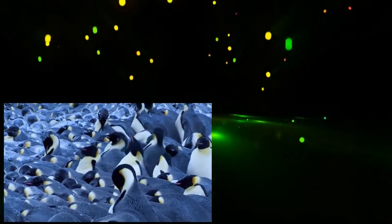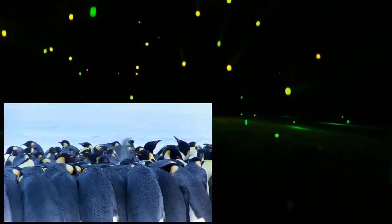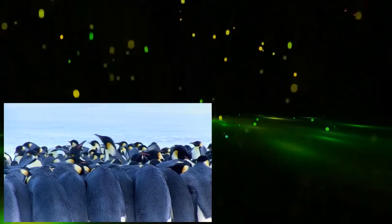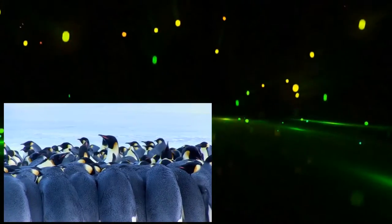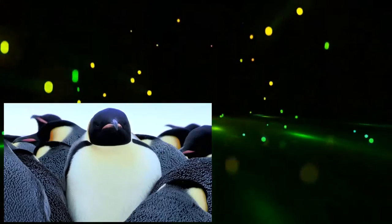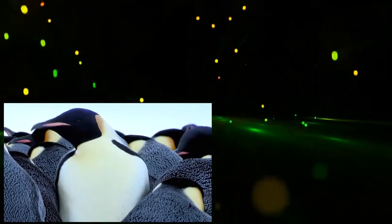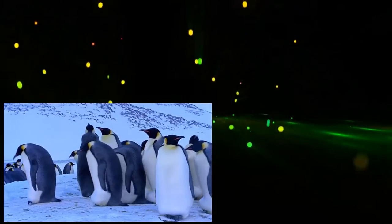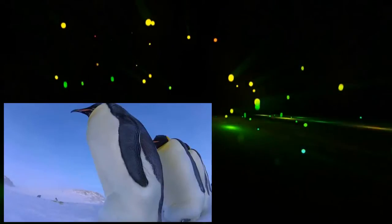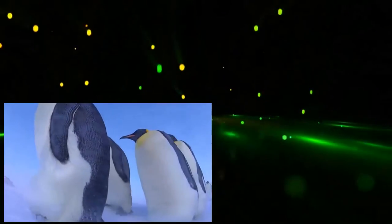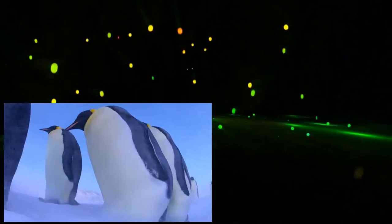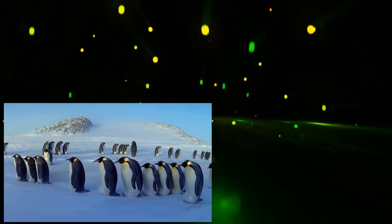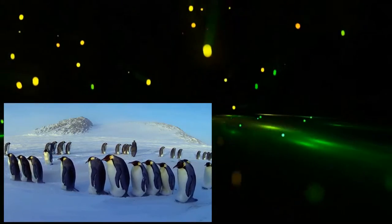But there's a problem. She's now stuck in the middle, no closer to finding her mate. But the males have a solution. They peel away and form an orderly line. Their chicks are safely tucked in the brood pouch between their legs. To help their partners, they have formed an identity parade.